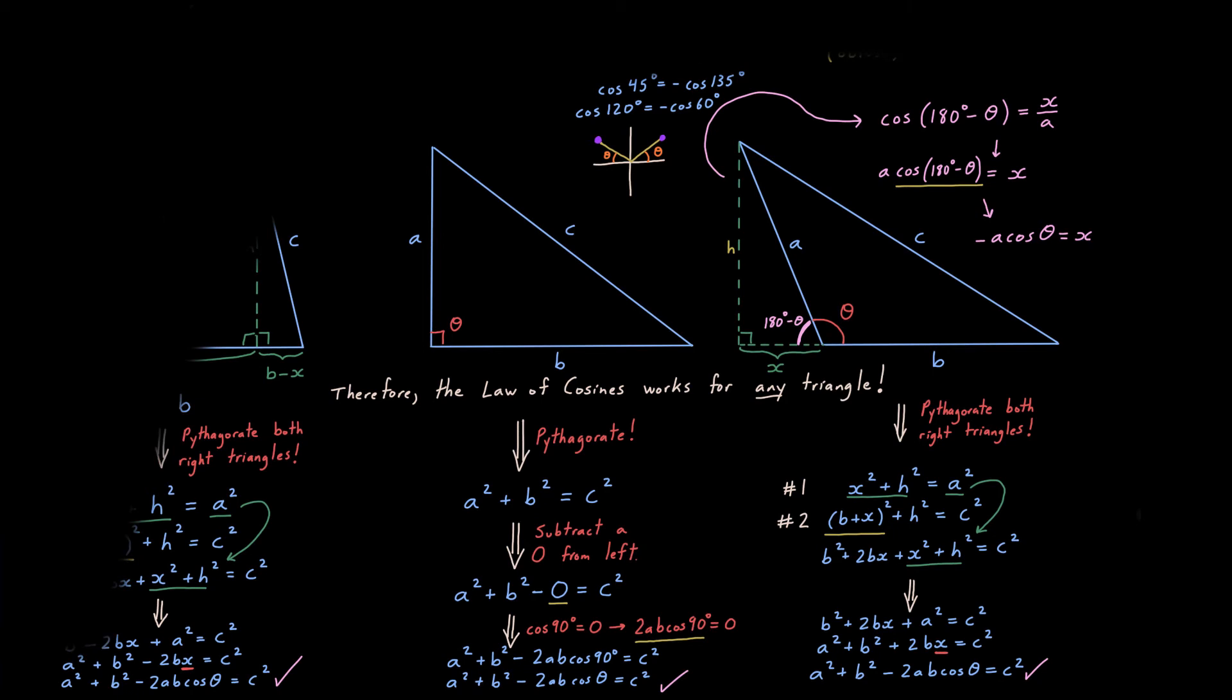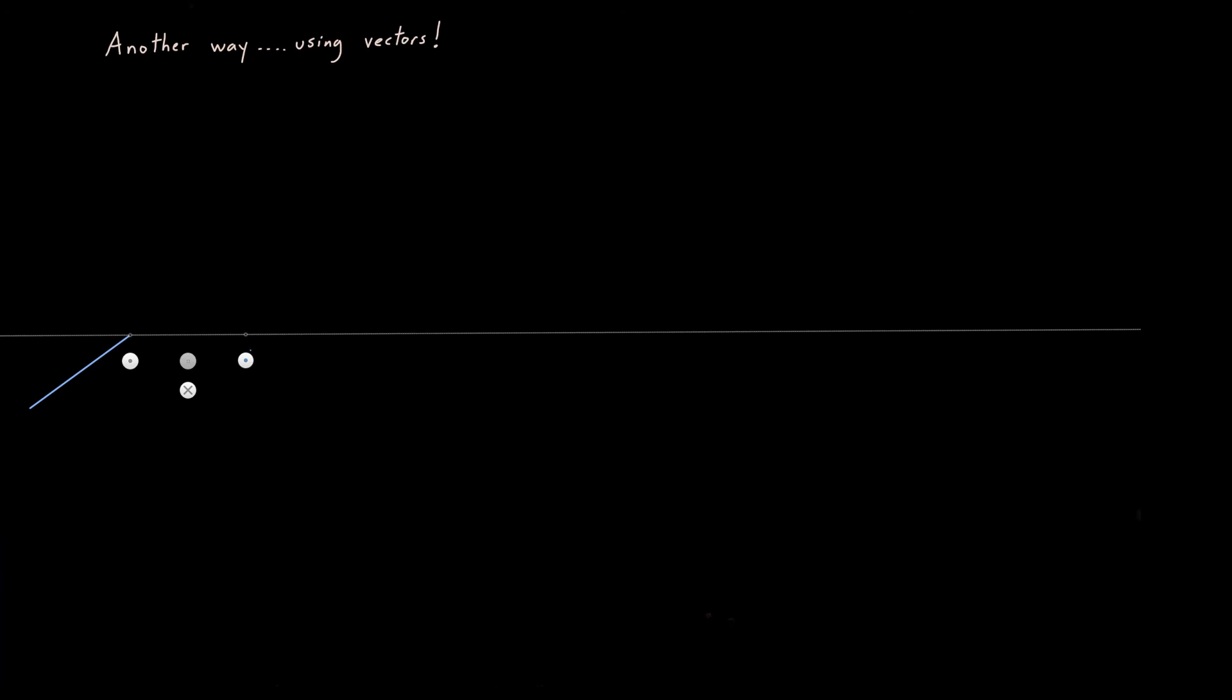With that, you have proven the law of cosines for any triangle. Lastly, here's a very different way to prove the law of cosines, one that uses vectors. I'm going to do this in 3D space to really hammer the point home.